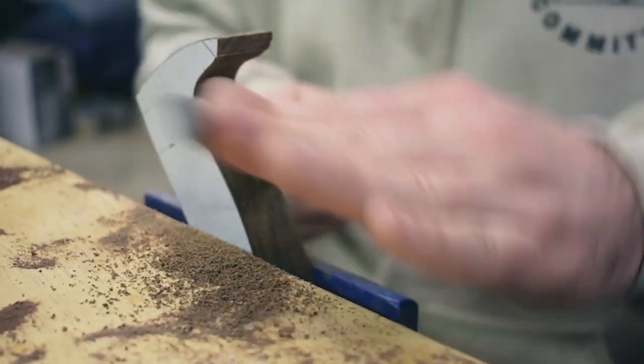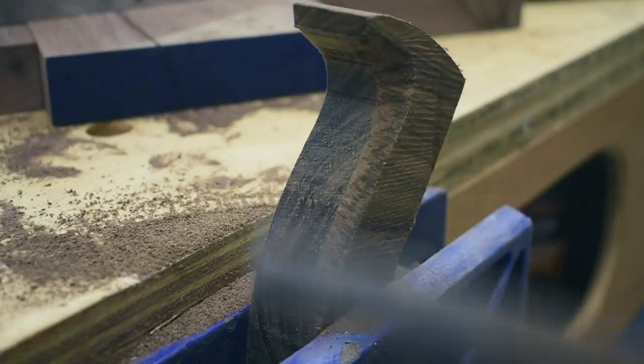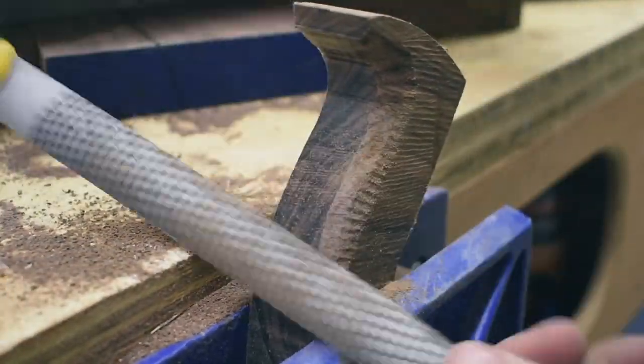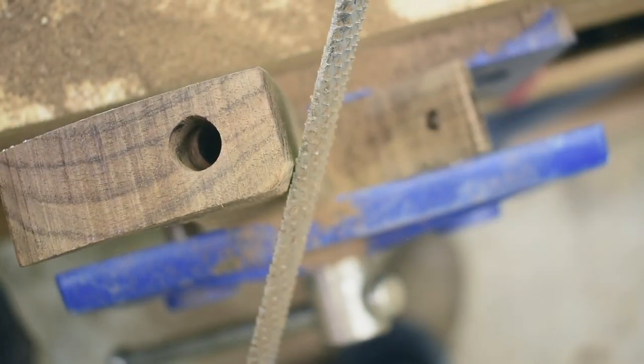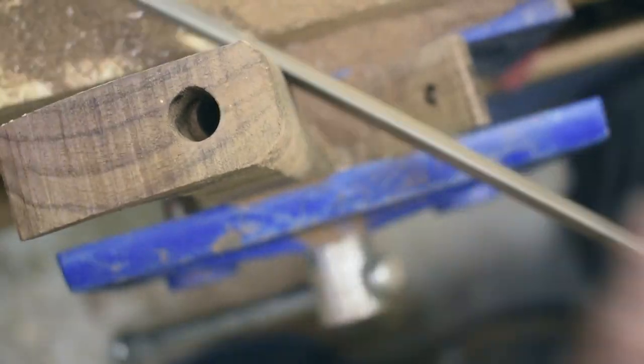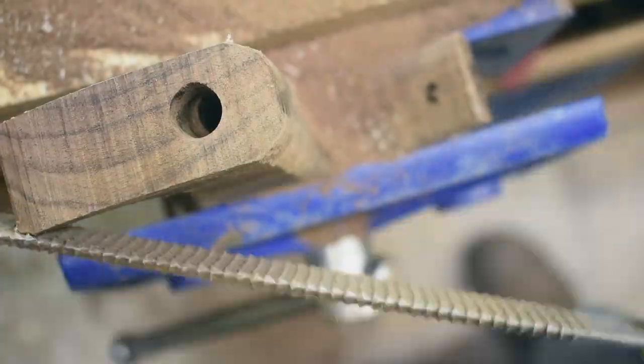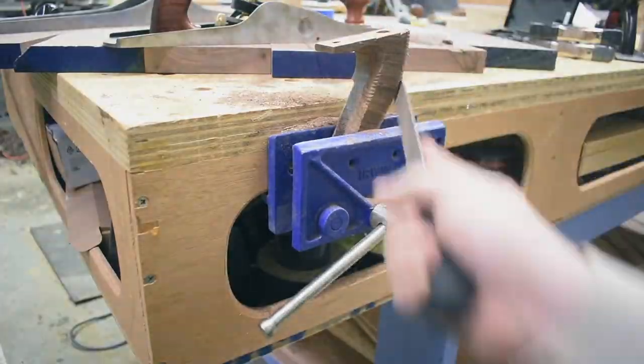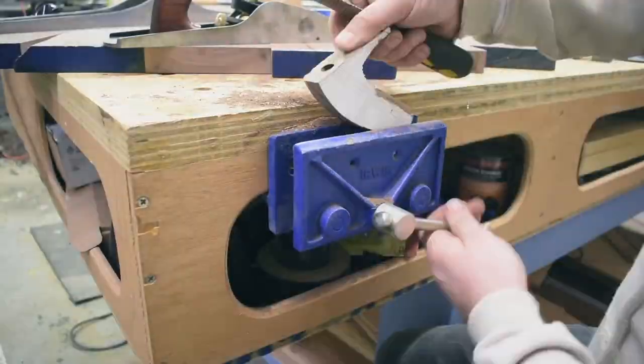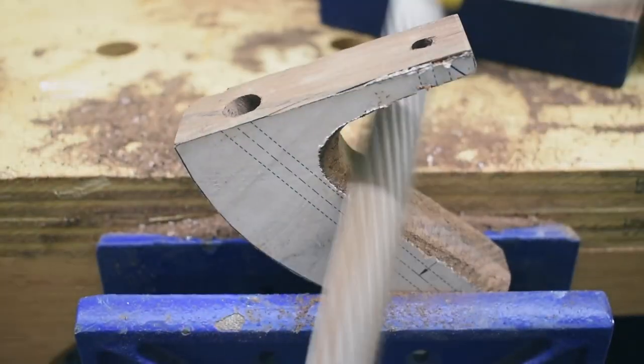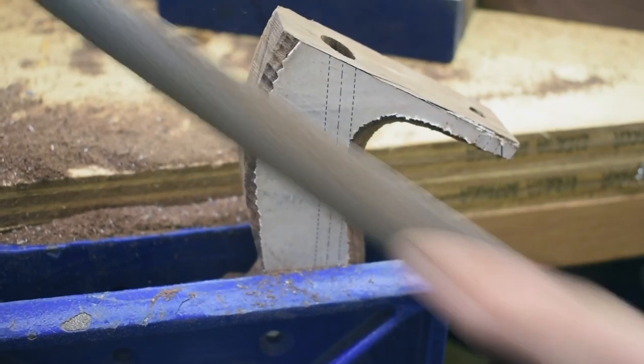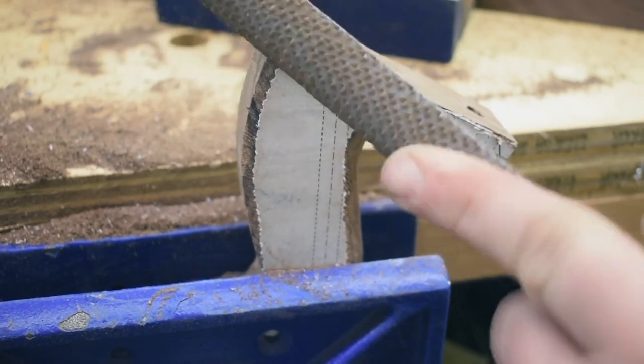But rasps of course aren't the only way to do this. You could also use spoke shaves, draw knives, chisels, carving knives, or even a router with a roundover bit. There's lots of options to get creative. And then once I got most of the handle roughed out I went to my oscillating belt slash spindle sander to do all the final kind of work on it and really get it to shape.